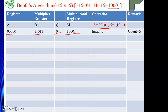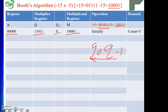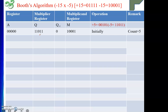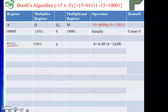Now I will do the operations. See this is 0 to 1: Q0 is 1 and Q minus 1 is 0, which means it is a subtraction operation. So I will perform A minus M, that is, adding the 2's complement of M to A. The 2's complement of M (which is minus 15) is positive 15. So adding positive 15 to A (which is all zeros), the result will be positive 15 itself. Then Q and Q minus 1 are written again.